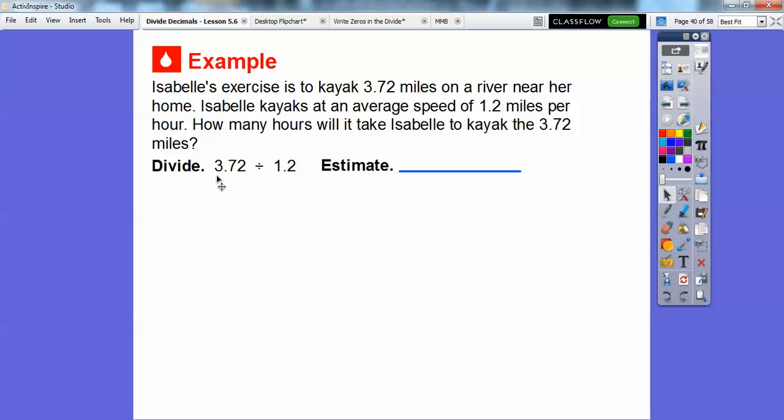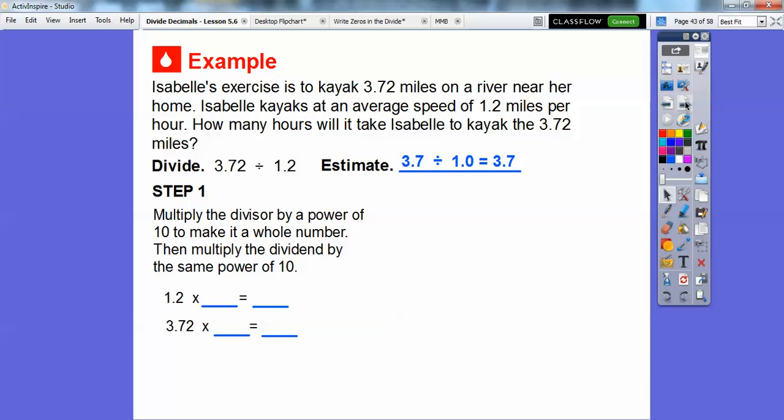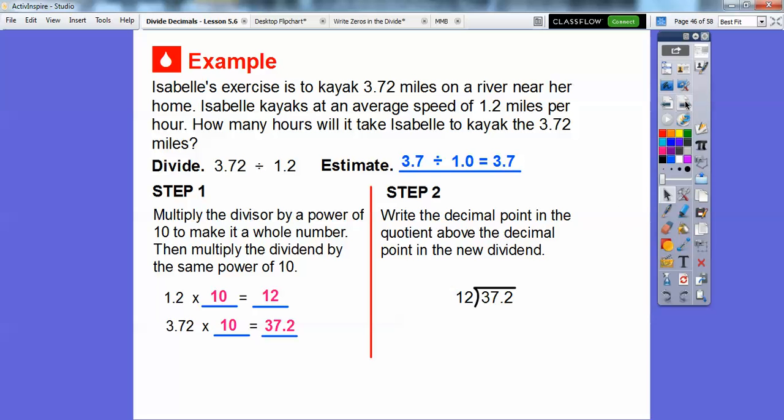Well, if we just rounded this to like 3.7 and this rounds to like 1 close enough to 1 and 3.7 divided by 1 is going to get us 3.7 right there. So let's multiply the divisor. Remember this 1.2 is the divisor by a power of 10 to make it a whole number. So we're going to move it over one place to the right to make it 12. So we're going to multiply 1.2 times 10. That will move it over one place to the right. So that means we're going to have to multiply 3.72 times 10 and that's going to move it over one place to the right. Do you see how it went over from here to here? There it is right there.